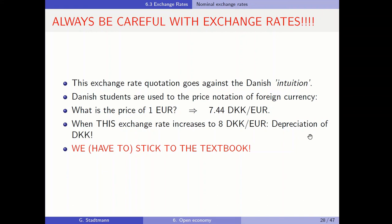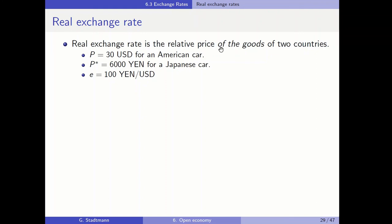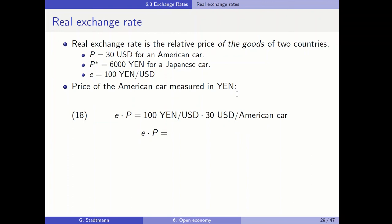We have talked about the so-called nominal exchange rate. What about the real exchange rate? The real exchange rate is the relative price of the goods of two countries. Let's assume that the price of an American car is 30 US dollars, and the price of a Japanese car is P* equal to 6000 yen. The nominal exchange rate is at 100 yen per US dollar. So the price of the American car measured in yen equals the exchange rate E times the domestic price level: 100 yen per dollar times 30 dollars equals 3000 yen for the American car.